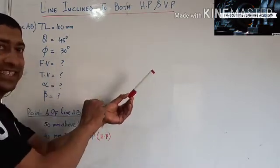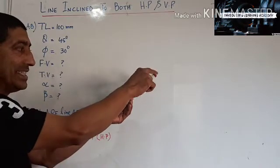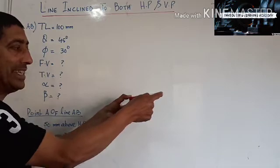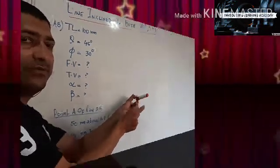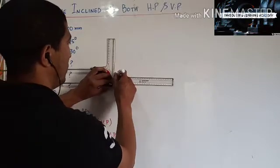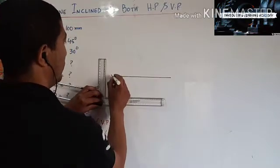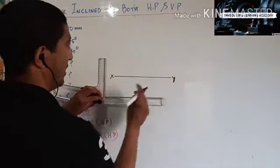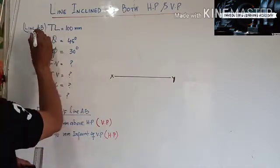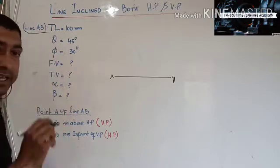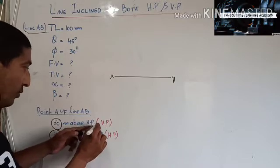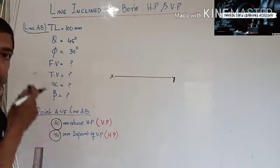Then in the second instance we cancel its inclination with the horizontal plane and say the line is inclined only with the vertical plane. Now we will start and draw the XY line. We have to find the end A of line AB, which is 50 mm above HP and 40 mm in front of VP.